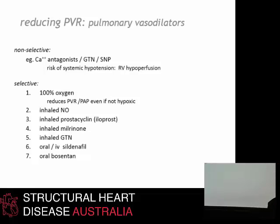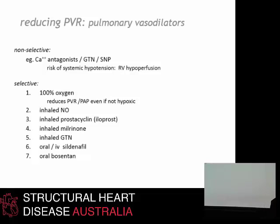Effective agents that have been shown to be of use include inhaled iloprost, which we use quite routinely in some of our patients; inhaled GTN; and oral sildenafil and oral bosentan, which are both highly effective agents at selectively decreasing PVR. More recently, IV sildenafil has been approved by the TGA in Australia as well, although it is quite expensive.